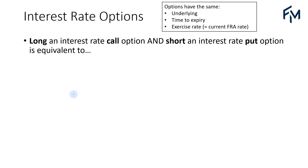In this video, we are going to look at the different equivalences when we combine different types of interest rate options or different types of swaptions. When we long an interest rate call option and short an interest rate put option, these options have the same underlying interest rate, the same time to expiry, and the same exercise rate, which is the current forward rate agreement rate.